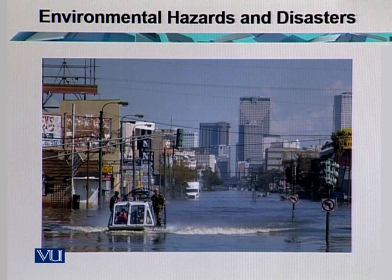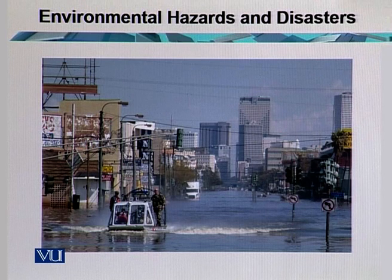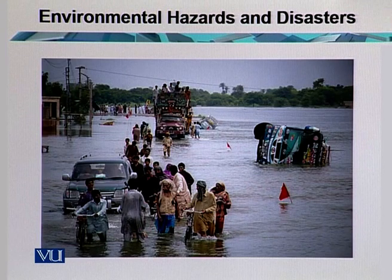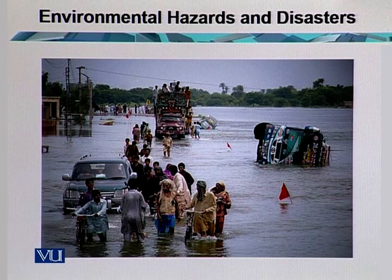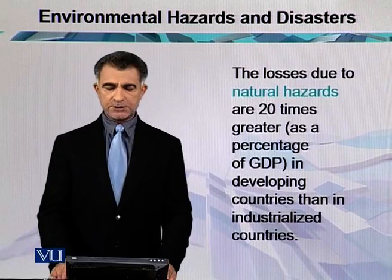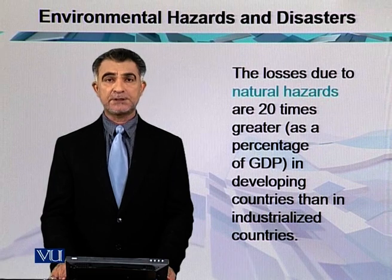This slide shows a developed region experiencing an environmental hazard in the form of a hurricane. We see that the streets, roads, and the main boulevards are filled with water, but the damages are less. But this slide shows the flood in Pakistan in 2014, in which most of the population suffered with the environmental hazard — it became a disaster because there were human losses. The losses due to natural hazards are 20 times greater in developing countries than in industrialized countries.